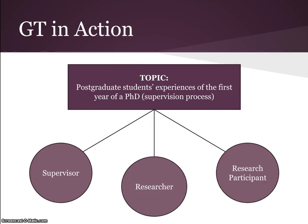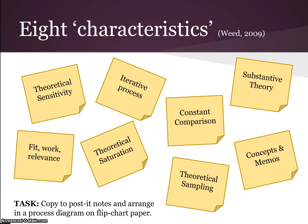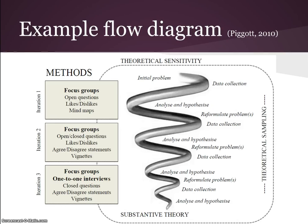Once we'd done that, we went into an action research process — we actually got into doing a Grounded Theory study and had a go at it. People took different roles: supervisor, researcher, and participants. We saw how these processes were carried out live in action in a piece of research. Emerging from that, I showed a diagram which is effectively an example flow diagram of how I went about doing my Grounded Theory study in my PhD.